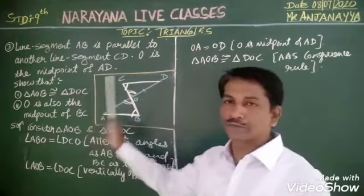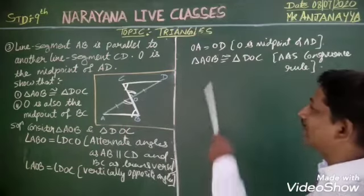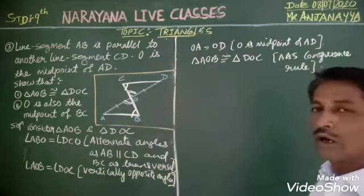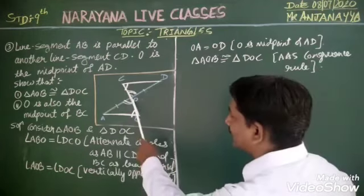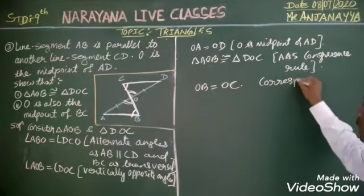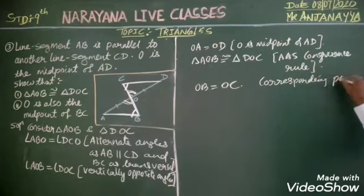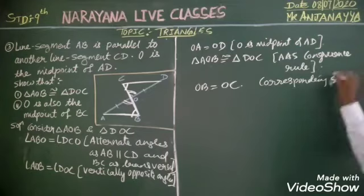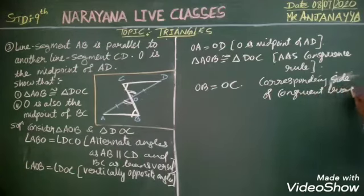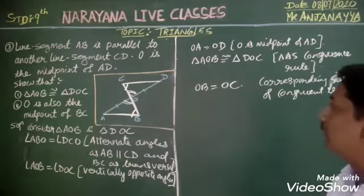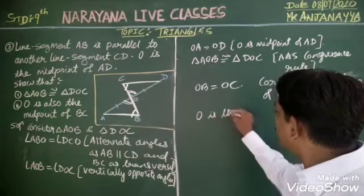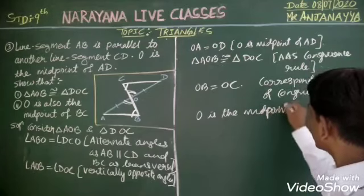That is the first part of the proof. For the second part, since the two triangles are congruent, their corresponding parts are equal. So I can directly say OB is equal to OC — corresponding sides of congruent triangles. Therefore, O is the midpoint of BC. That is my second required proof.